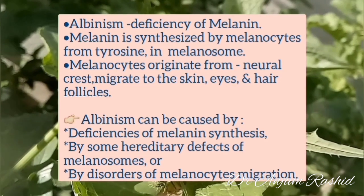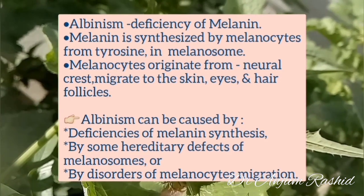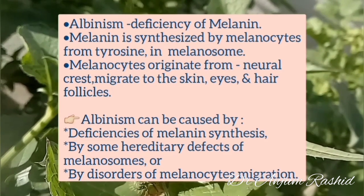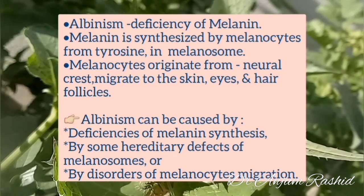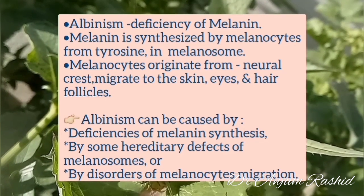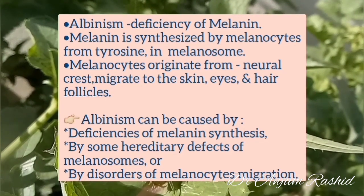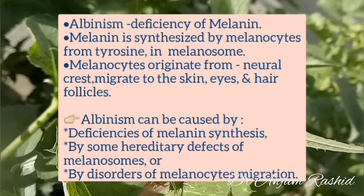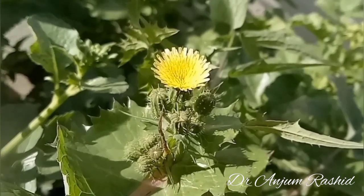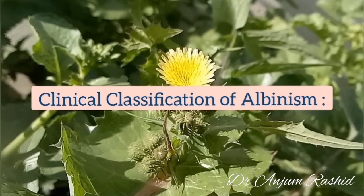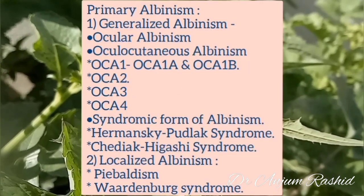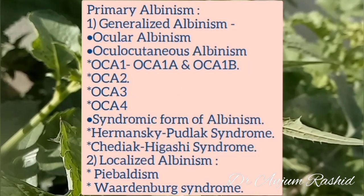Melanocytes originate from the neural crest and migrate to the skin, eyes, hair follicles, and internal ear during development. Albinism can be caused by deficiency of melanin synthesis, by hereditary defects of melanosomes, or by disorders of melanocyte migration.